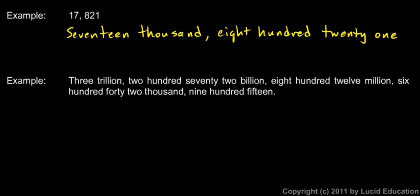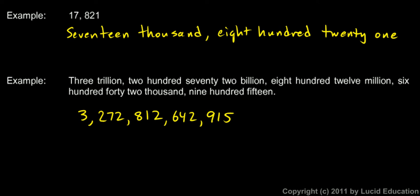In the second example, we're going in the other direction. We're given the words and we're told to write the number. This is a lot easier, just because it's easier and faster to write the digits than to write out the words — you just write them in order. 3 trillion, so we write 3 comma, 272 billion, 812 million, 642 thousand, 915. That's our answer.